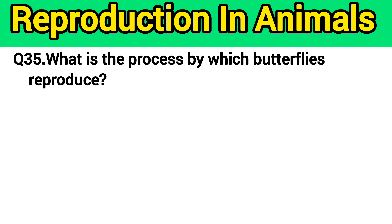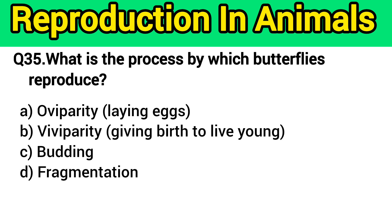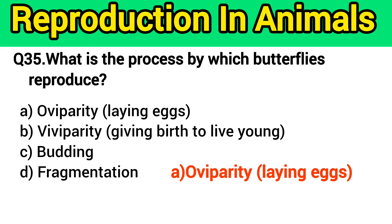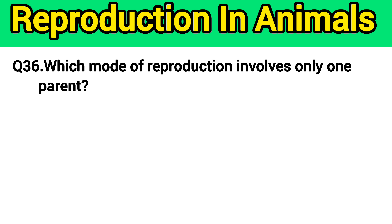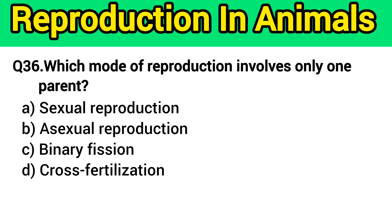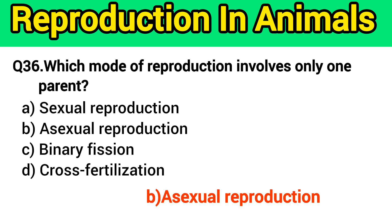Question number 35: What is the process by which butterflies reproduce? The right answer is option A — oviparity, that means laying eggs. Question number 36: Which mode of reproduction involves only one parent? The right answer is option B — asexual reproduction.